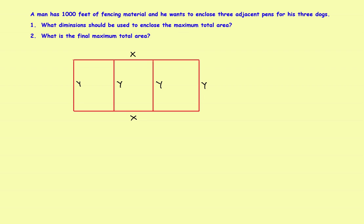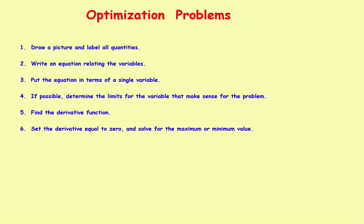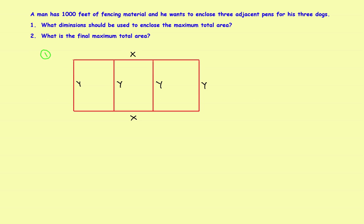Step two: write an equation relating the variables. We want to maximize the total area. This is one big rectangle, so the total area equals length times width: A = x · y. That's the formula we want to maximize — this is step two.